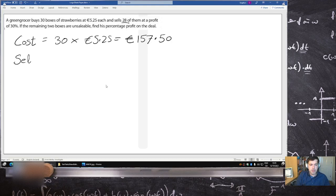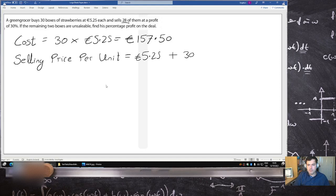So the selling price per unit. Well, it's going to be €5.25 plus 30% profit. So the 30% profit, let's calculate that.